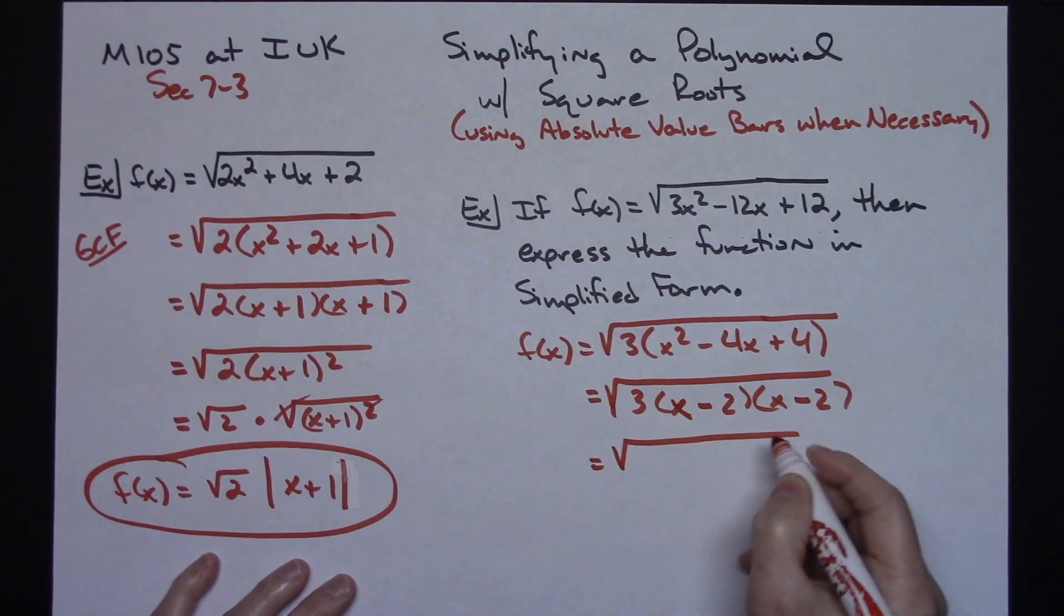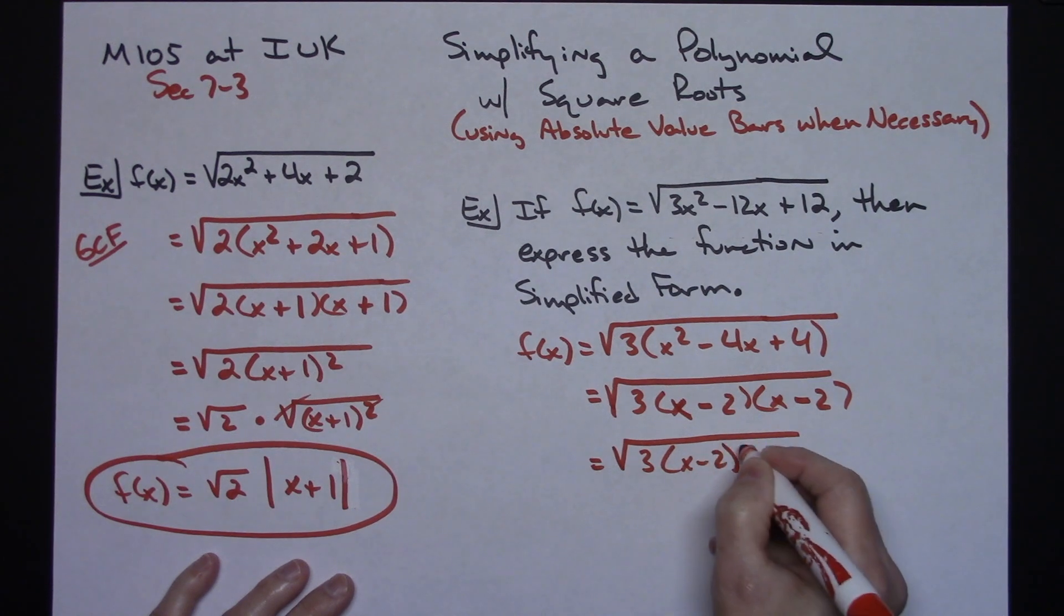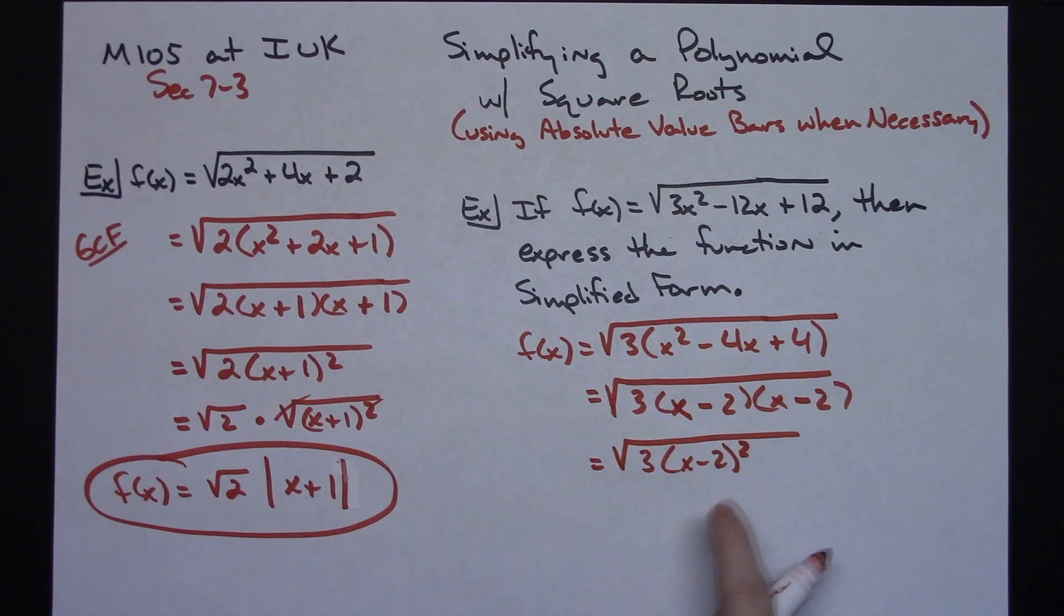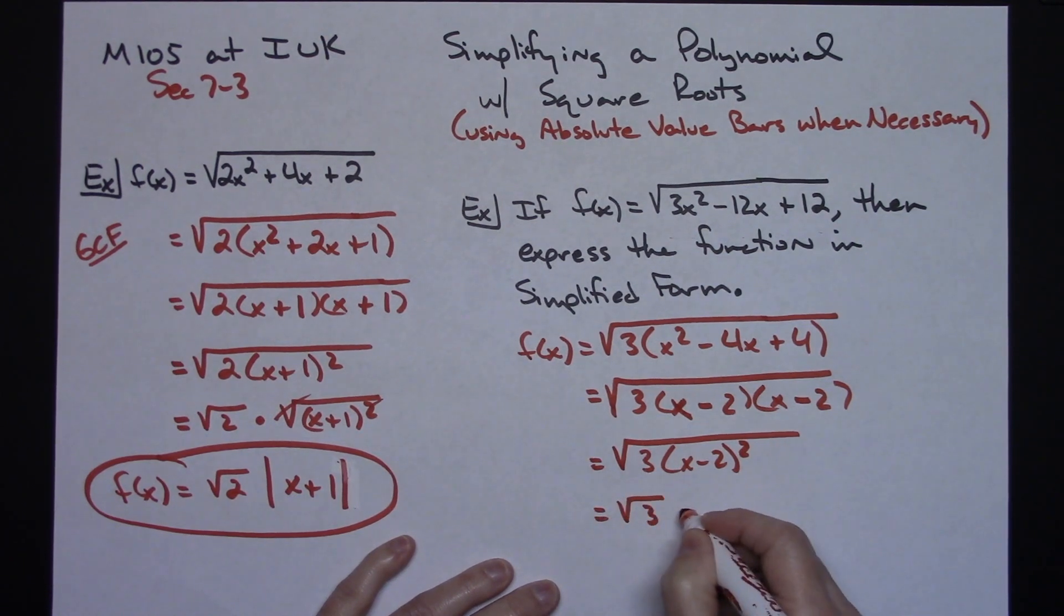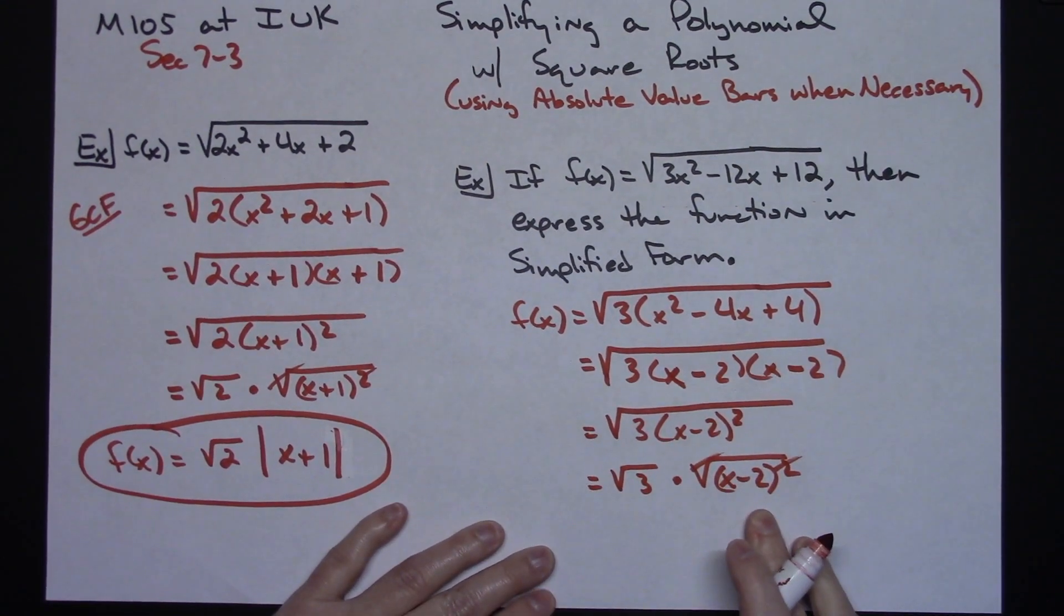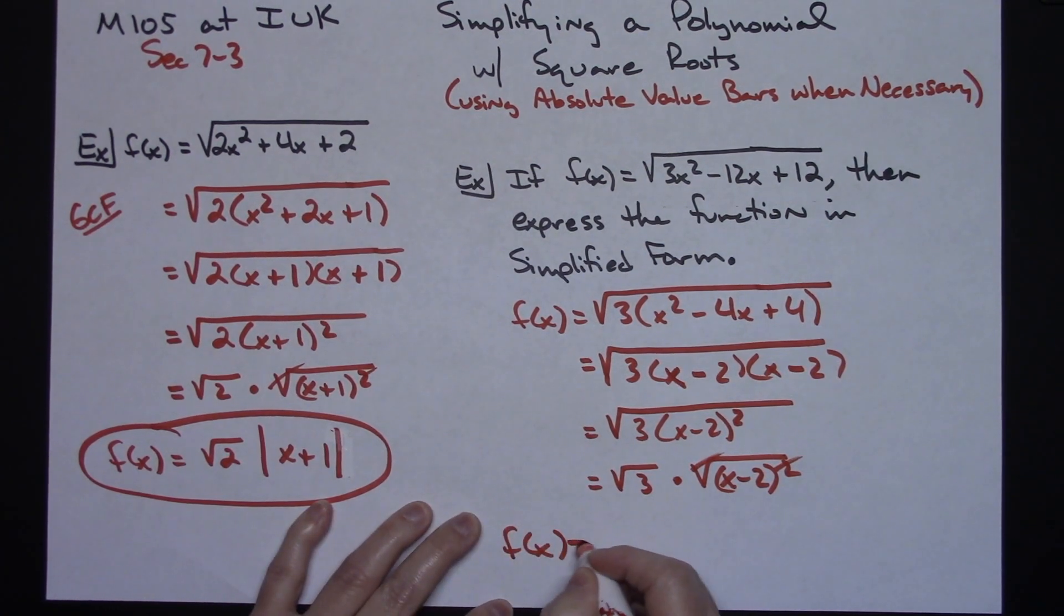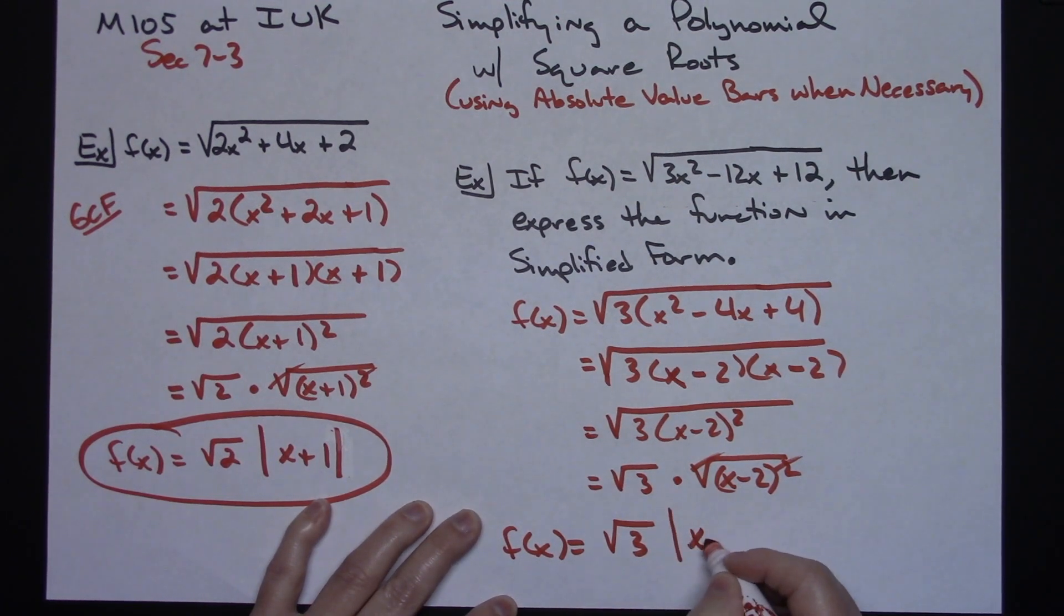Let's rewrite it so we can see 3 times x minus 2 to the second power. This being a perfect square, if we're showing all of our steps we would have the square root of 3 times the square root of x minus 2 squared. This is going to cross out because it's a square root. I need my absolute value bars around this, so I'm going to have my f of x equaling square root of 3 times the absolute value of x minus 2.